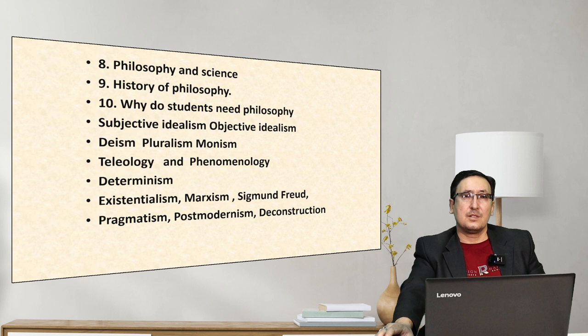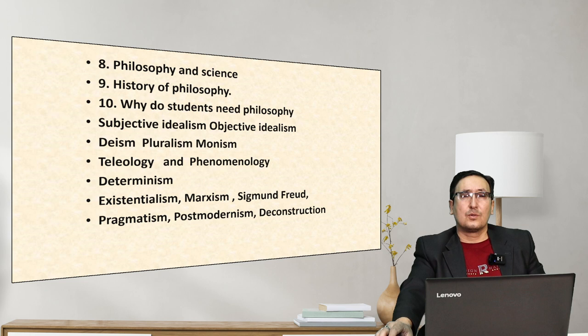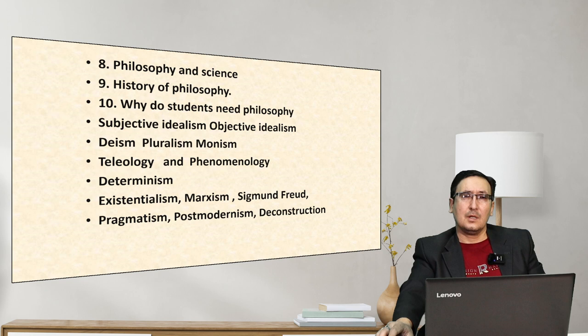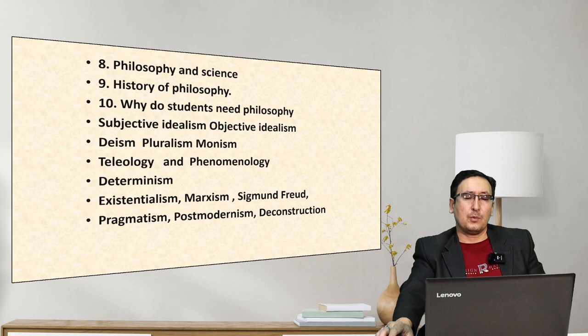Determinism holds our world is determined — there are no free actions; everything is determined and connected with human fate and destiny. Existentialism is a school of contemporary world philosophy. By existentialism, the human is an alien and our objective world is alien to us — we cannot understand our world, and truth can only be known through existential situations. This philosophy will be studied within contemporary philosophy.